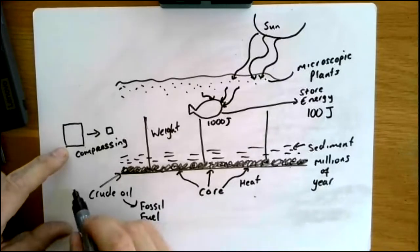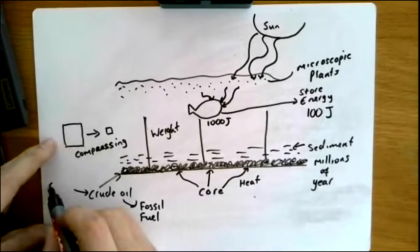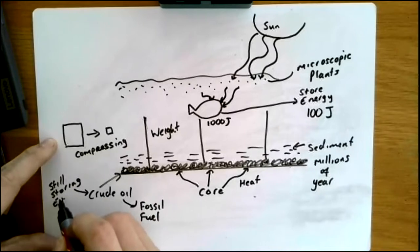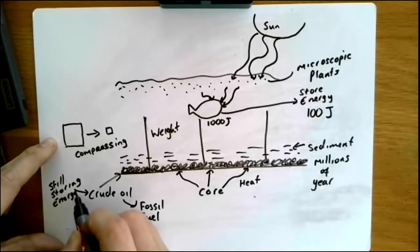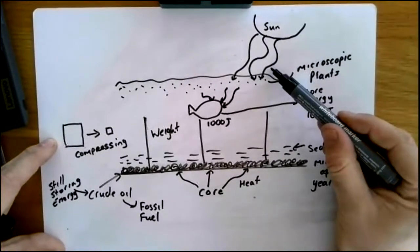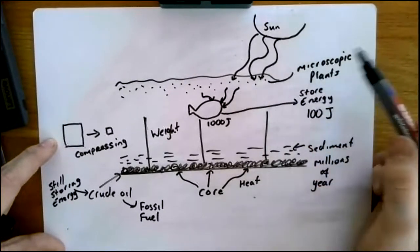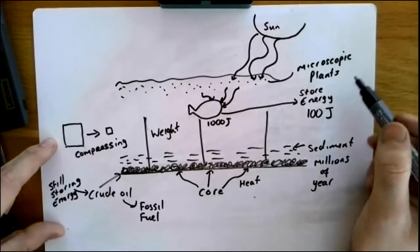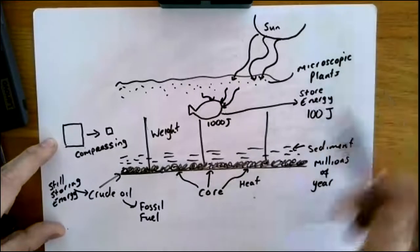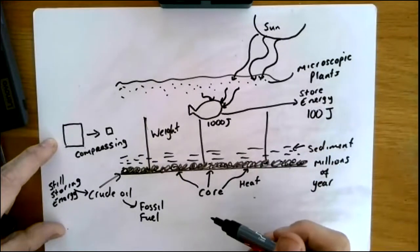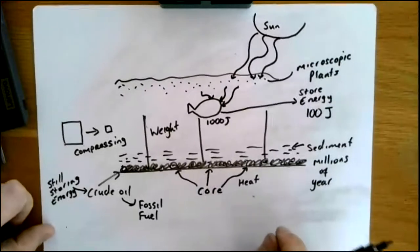The key thing about crude oil is that it's still storing the energy that the plants and animals once had — particularly the plants, when they were able to trap the energy from the Sun through a process called photosynthesis. When they die and fall to the seabed, if they don't decay, they remain storing this energy.